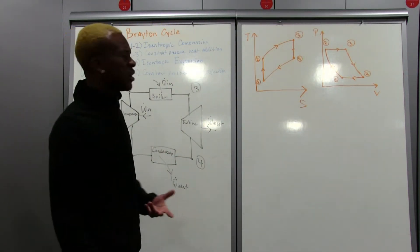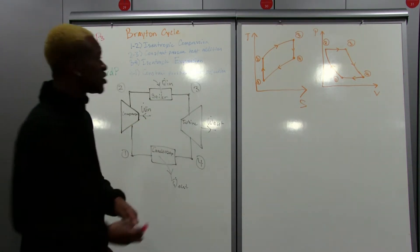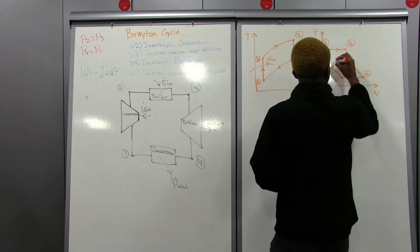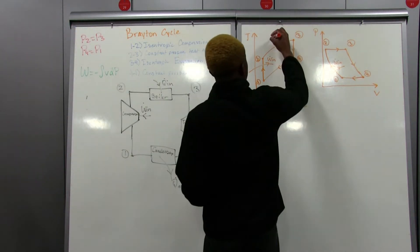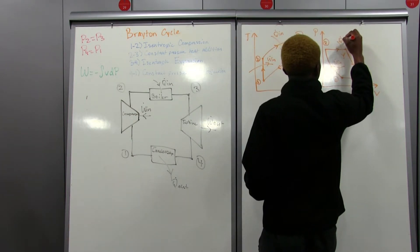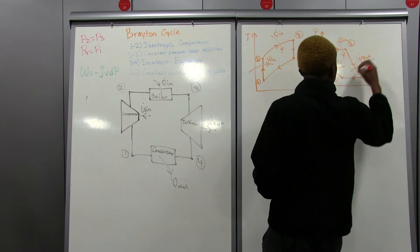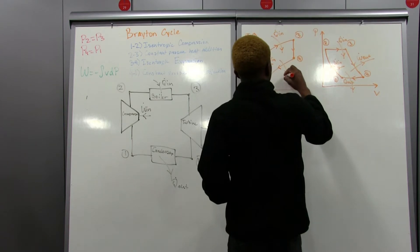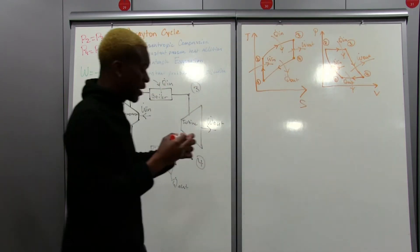We're not really done labeling these graphs. From one to two we have isentropic compression — compressors have work in, so we draw work in on both graphs. From two to three we have heat in on both graphs. From three to four we have work out. And from four to one we have heat out. Those are the labels you end up getting for both the T-S and P-V diagrams.